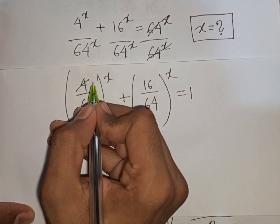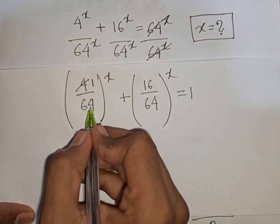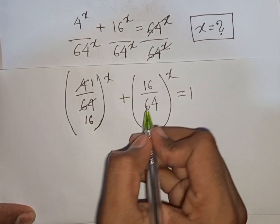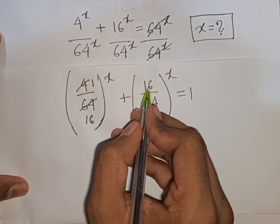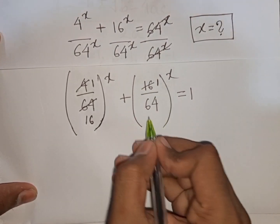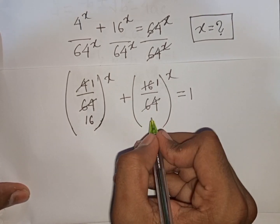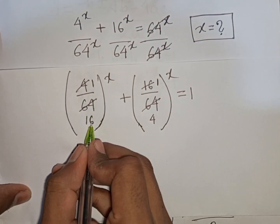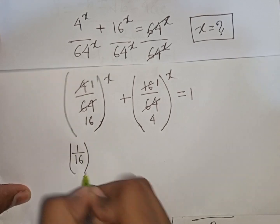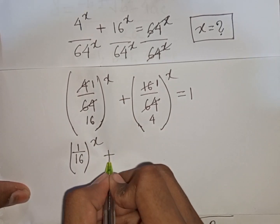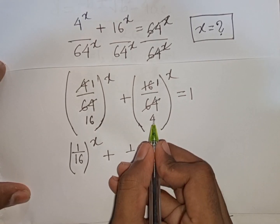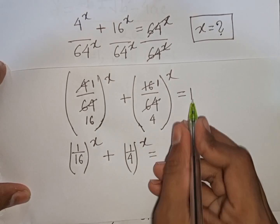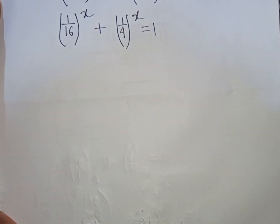Now simplify the fractions: 4 divided by 64 equals 1/16, and 16 divided by 64 equals 1/4. So we have (1/16)^x + (1/4)^x = 1.